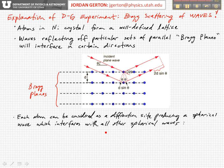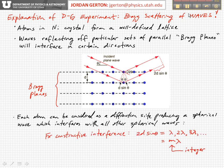The condition for constructive interference is given by 2d sin θ equals some integer multiple of the wavelength. That gives you constructive interference.